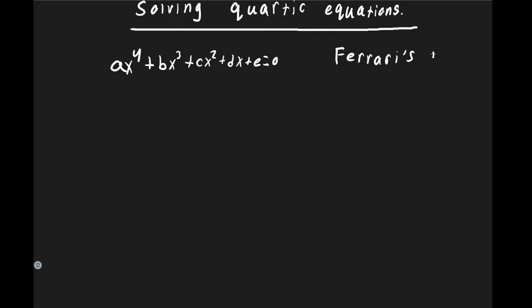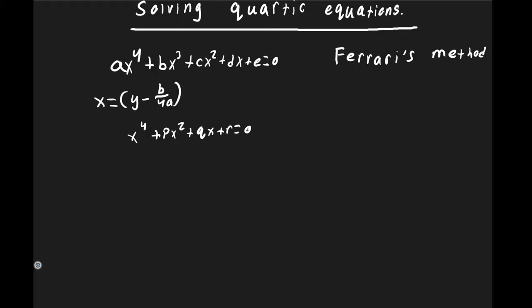Ferrari's method was discovered during the 16th century by a mathematician named Ludovico Ferrari. What he would do to solve a general quartic of the form ax⁴ + bx³ + cx² + dx + e = 0 was to depress it by substituting x = y − b/4a, which cancels out the x³ term. By that substitution we get a depressed quartic: x⁴ + px² + qx + r = 0.